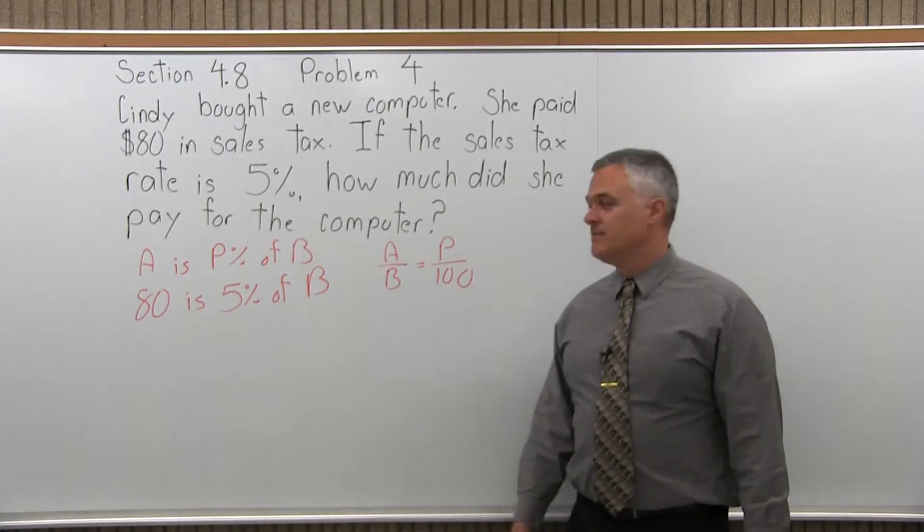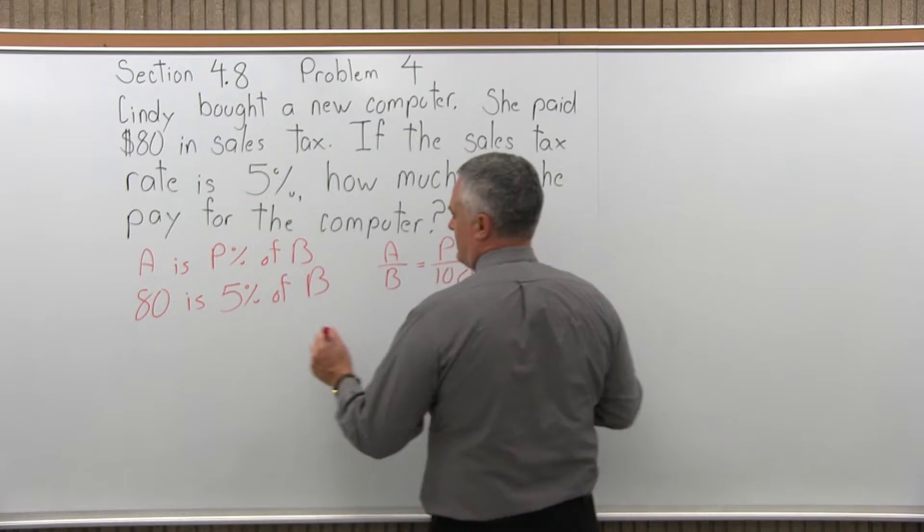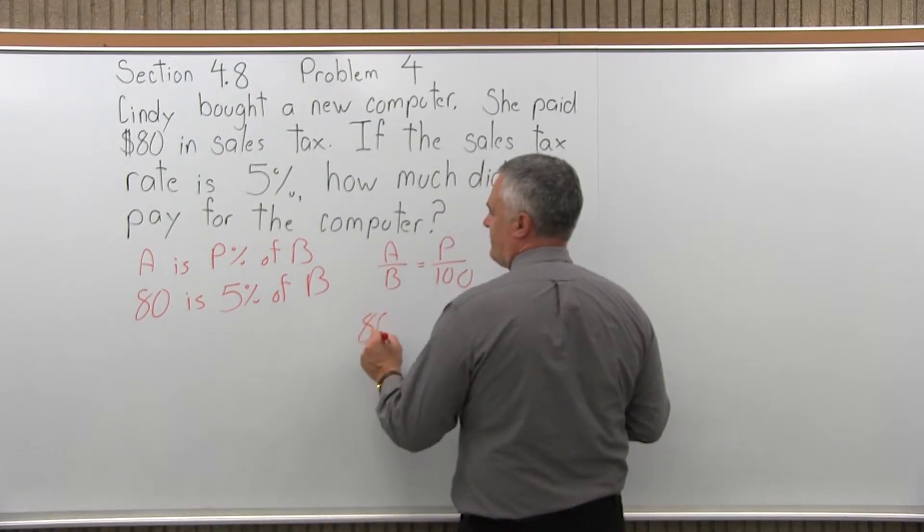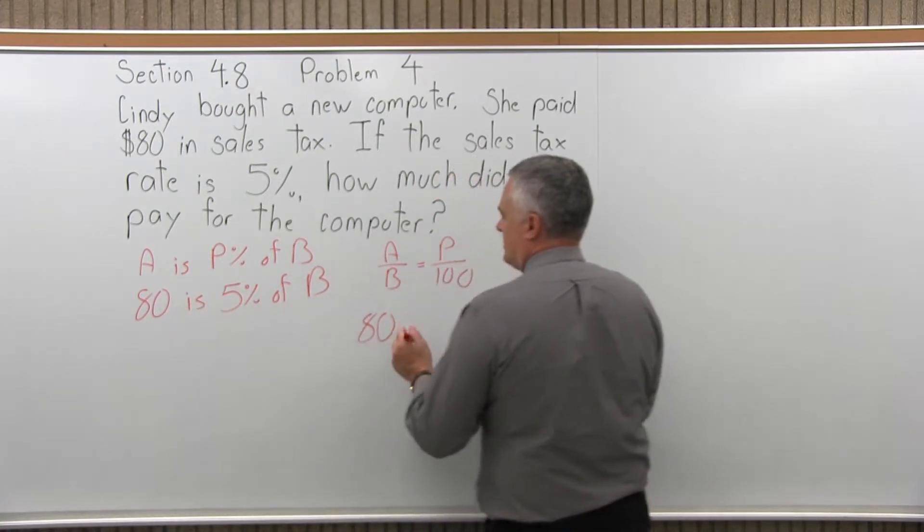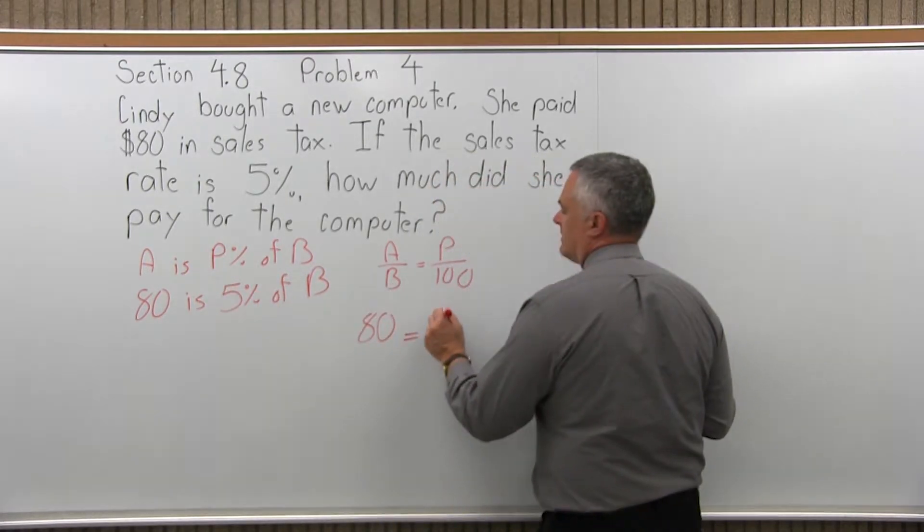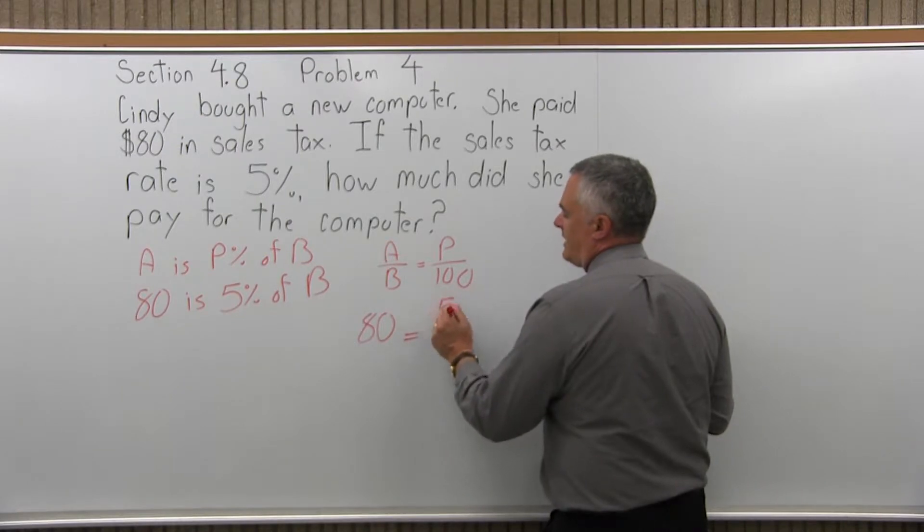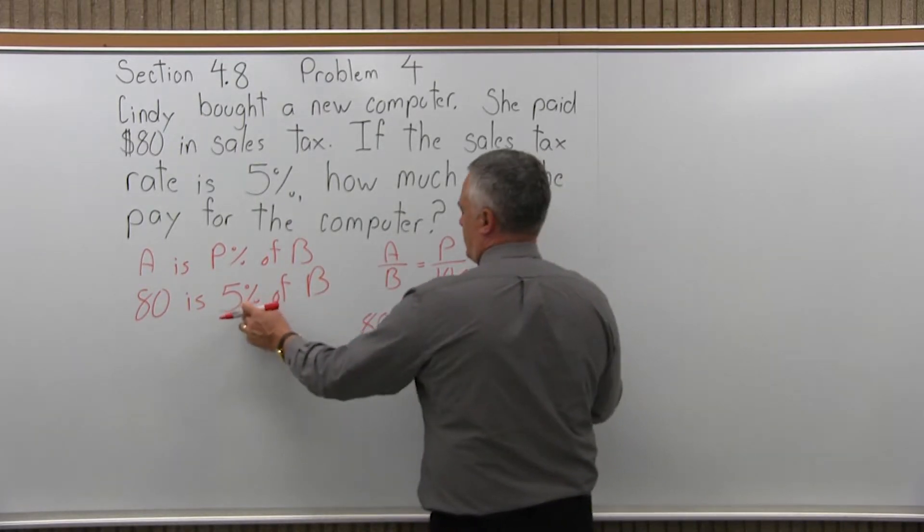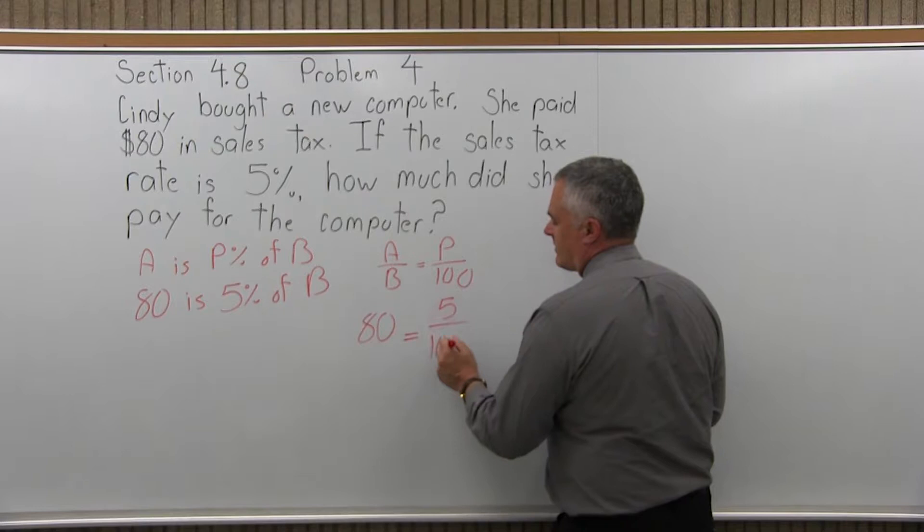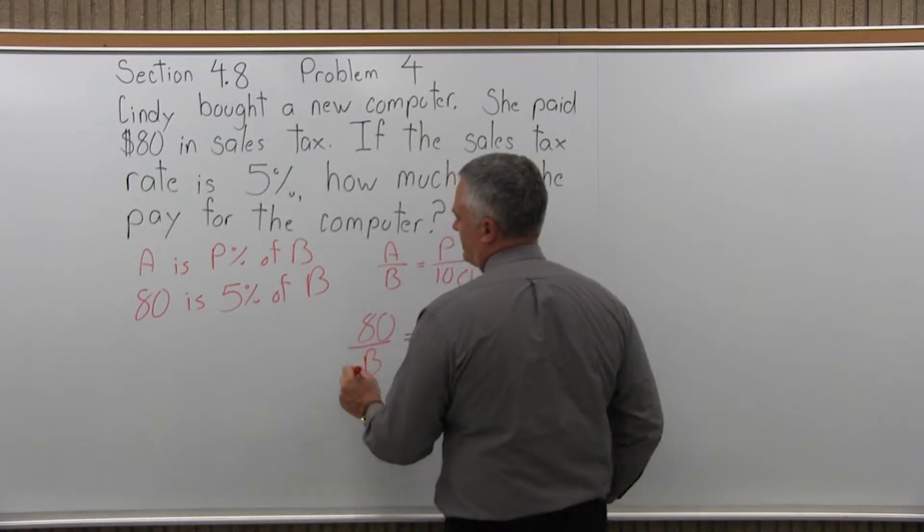I have 80 as 5% of B. So as I start filling in the formula that I like, 80 is the A. The is becomes the equal sign. The P is 5. The percent becomes the 100. And then the B in the denominator is the unknown. It just stays as B.